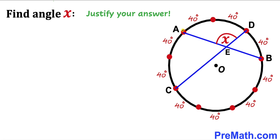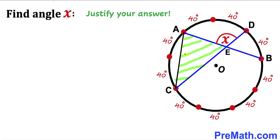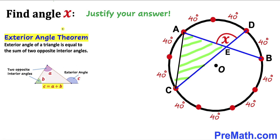Here's our next step. Let me go ahead and connect these two points A and C, as you can see in this next diagram. And as a result we get this triangle A, E, C.